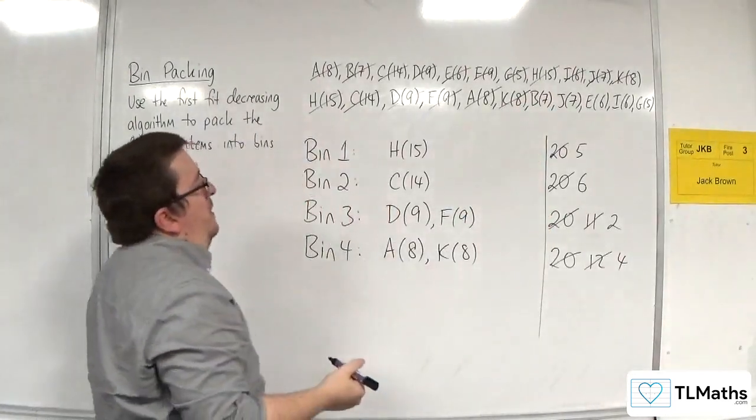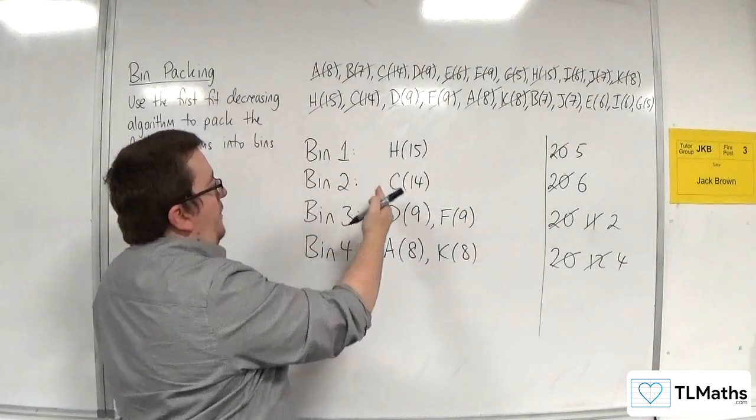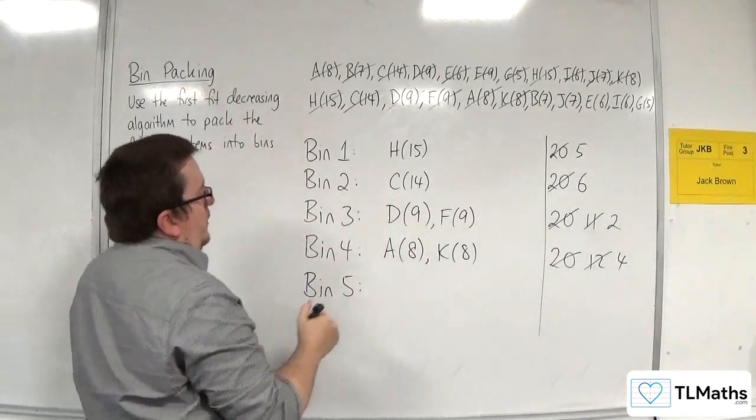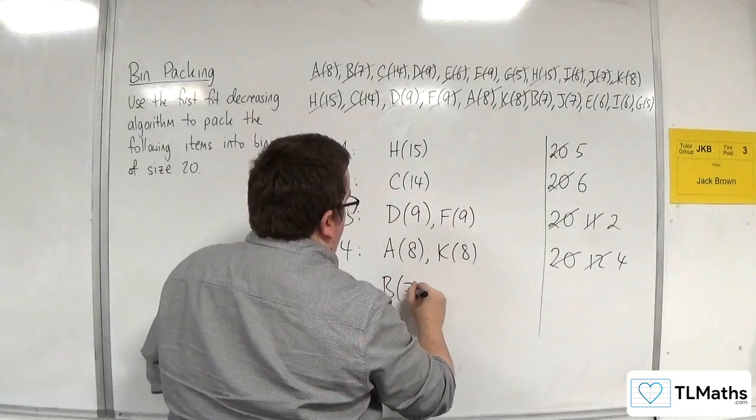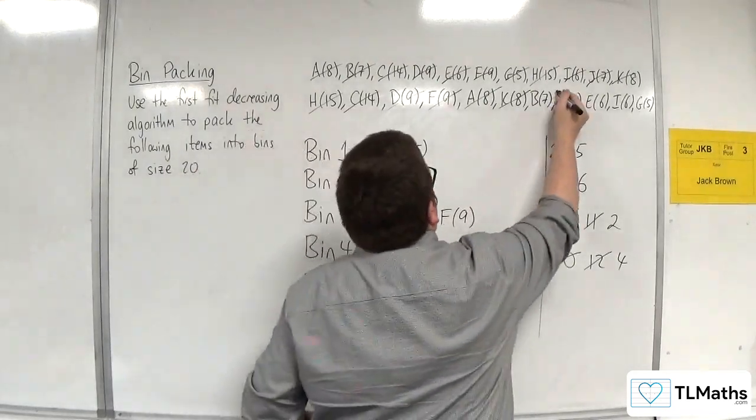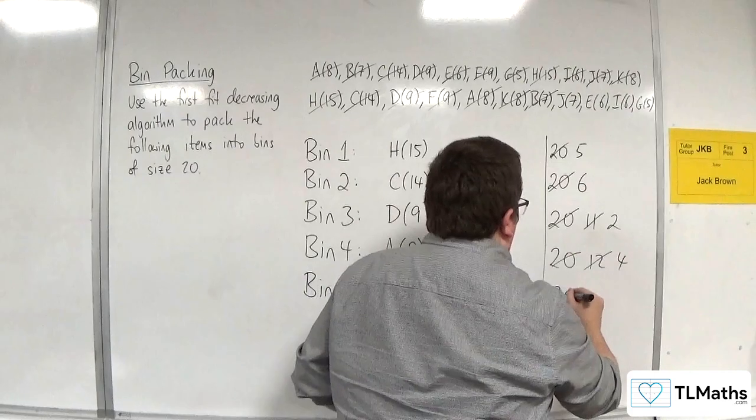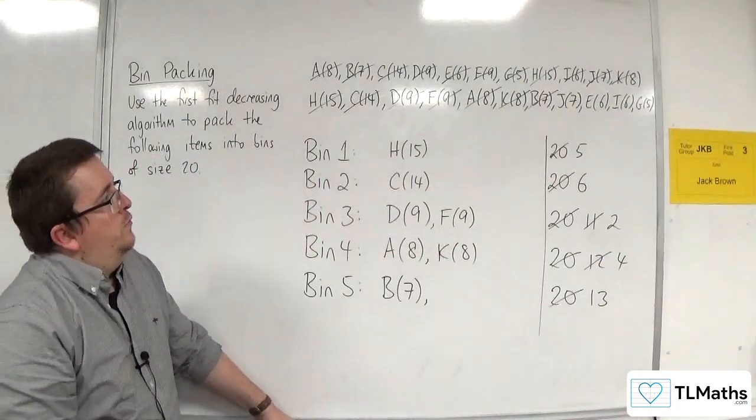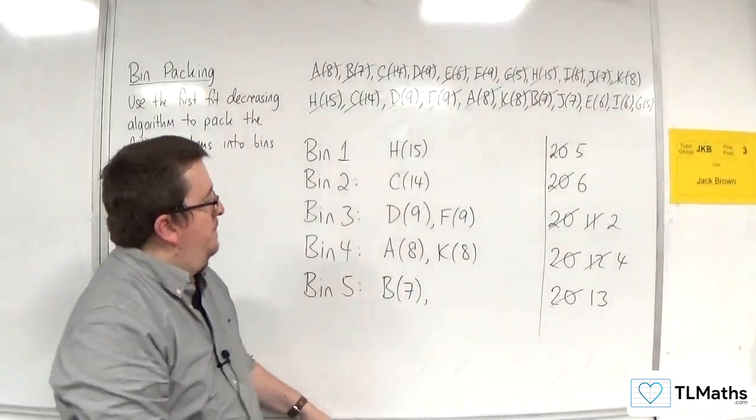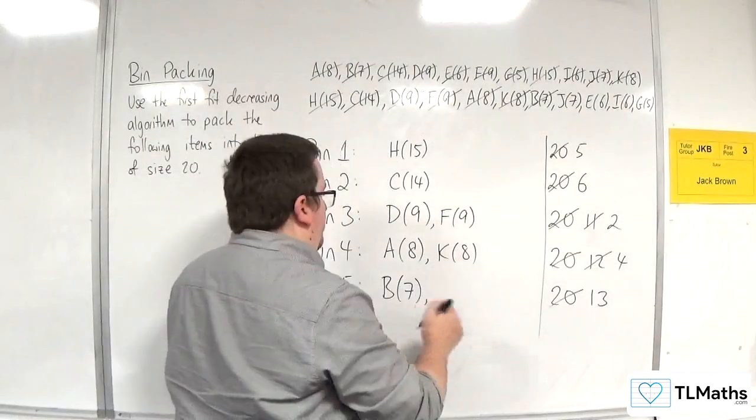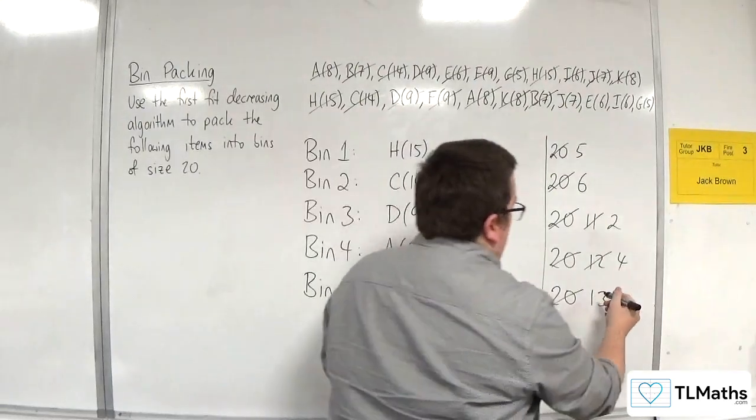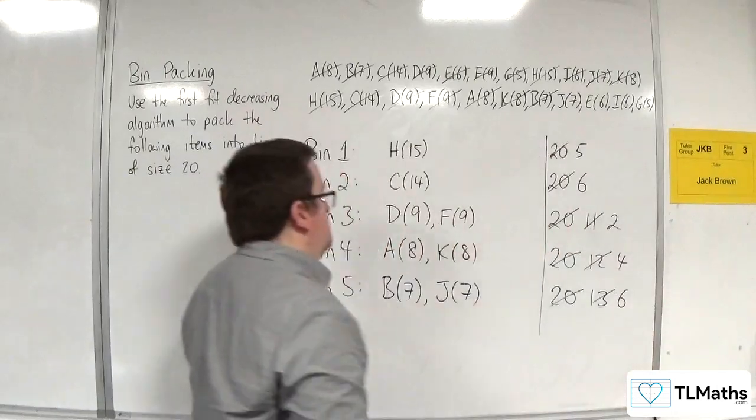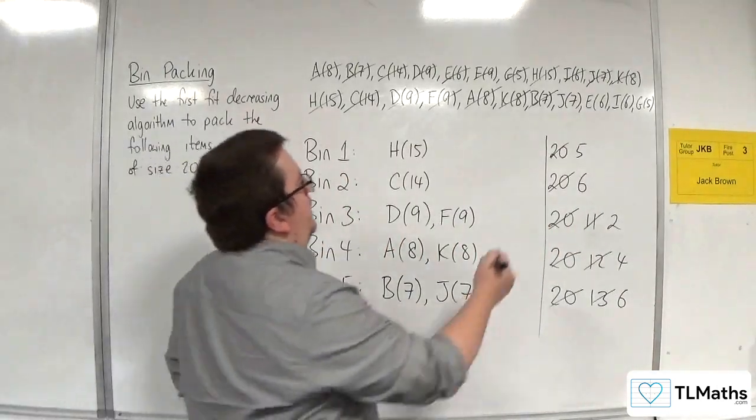Right. Then, I've got B7 comes along. Well, it doesn't fit in bin 1, 2, 3 or 4. So, I've got to open up bin 5. So, B7 is going in there. So, that's going from 20 down to 13. Right. Next one along is J7. Now, that's got to go into bin 5. It can't fit in any of the previous ones. So, that brings me down to 6. Okay.